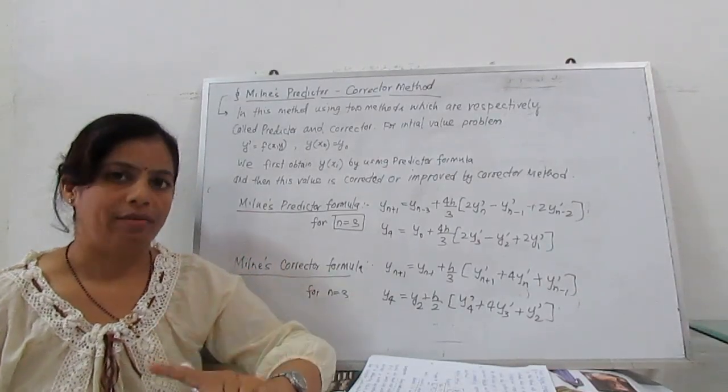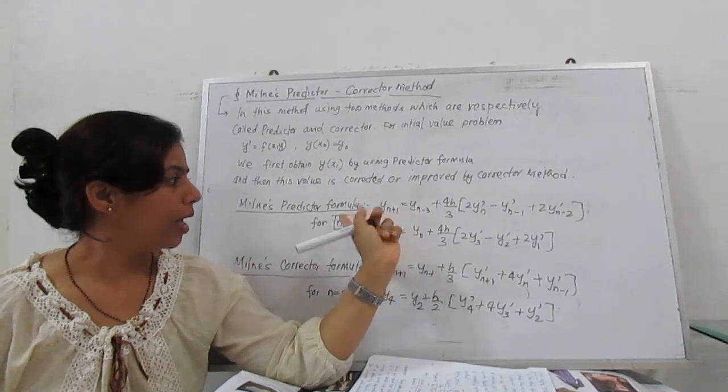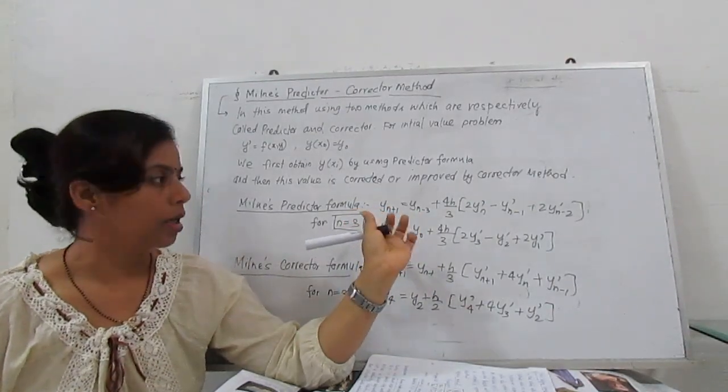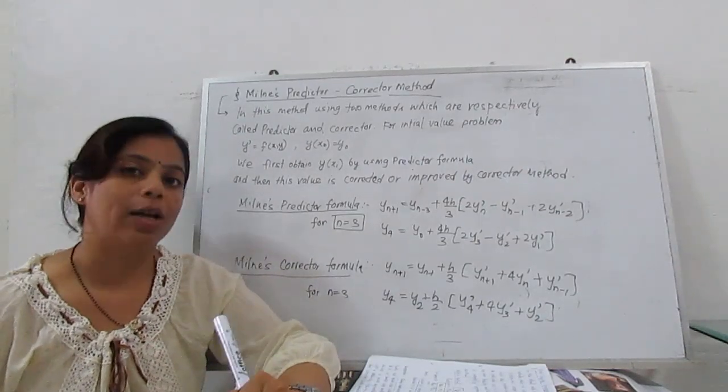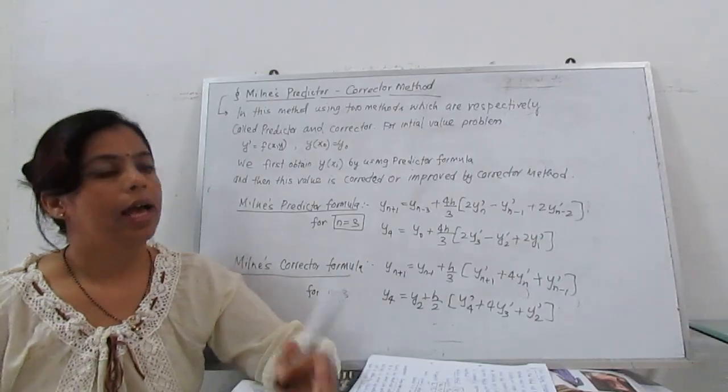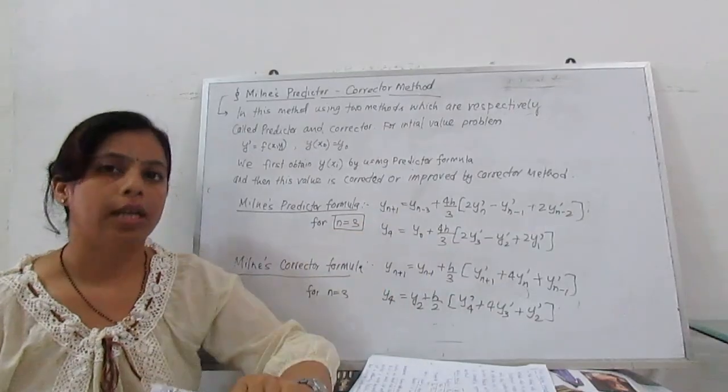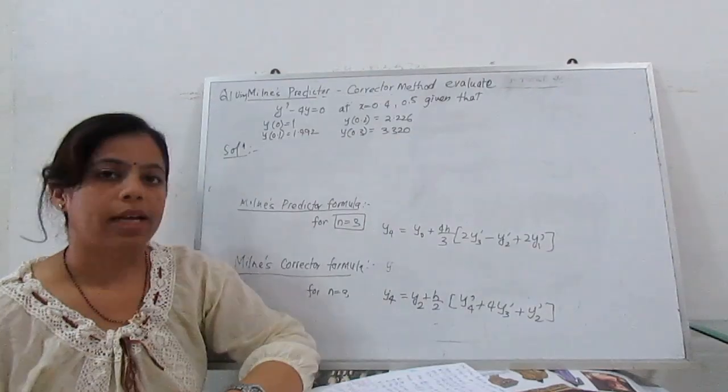Here we need x₀, y₀, x₁, y₁, x₂ and y₂ because we have to start with n = 3. So all initial values are given. If not given, we have to calculate with Taylor series method or any other previous method and then substitute here. Let's see with one example.